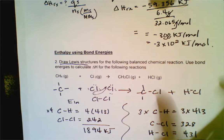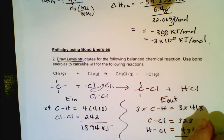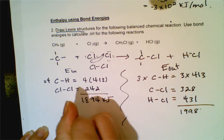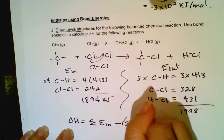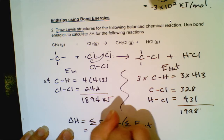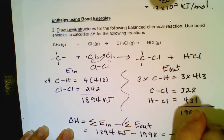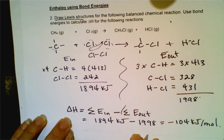This is energy out. When I tally that all up, I get 1,998 kilojoules of energy out of the system. To calculate delta H using bond energies, you take the sum of energy in and subtract the sum of energy out. In this case: 1,894 kilojoules minus 1,998 kilojoules gives negative 104 kilojoules per mole of methane in this particular reaction. That's how you calculate enthalpy using bond energies.